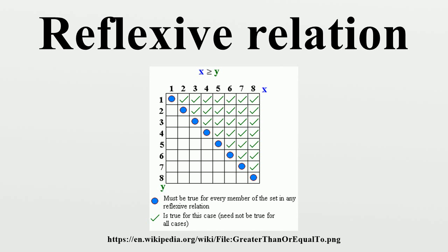A relation tilde on a set S is called quasi-reflexive if every element that is related to some element is also related to itself. Formally, if X, Y are in S, X tilde Y implies X tilde X and Y tilde Y. An example is the relation 'has the same limit as'.